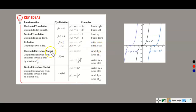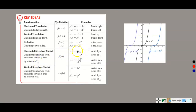For a horizontal shrink or stretch, graphs stretch away from or shrink towards the Y axis by a factor of 1 over A. This is probably the most confusing — people get this wrong a lot because they forget it's 1 over A. So (2x)³ is a shrink by a factor of 1 half, not 2. And (1/2 x)³ stretches it by a factor of 2.